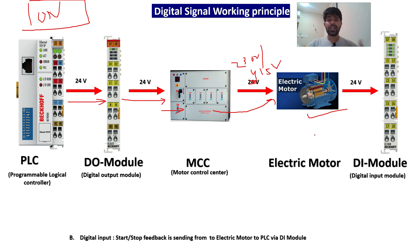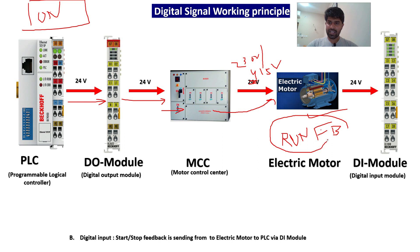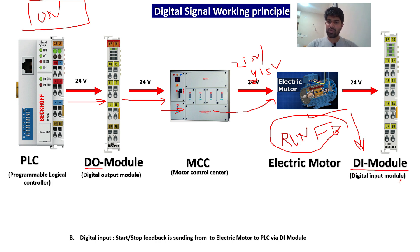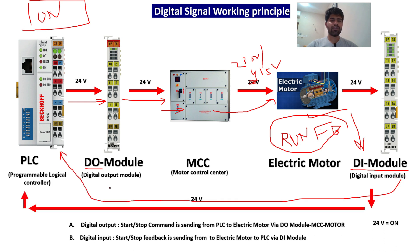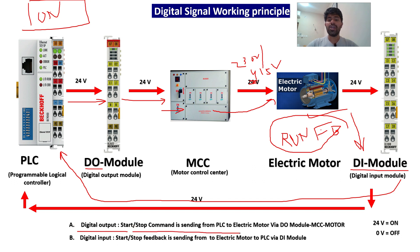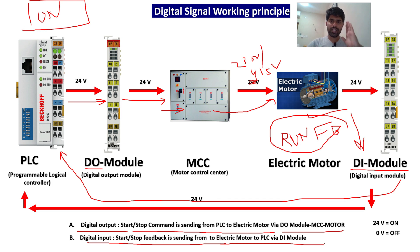The motor gets maybe 230 volt or 415 volt based on its capacity, and then the motor will turn on. How will I know whether the motor is on or off? I will have one tag for run feedback. This motor will have a run feedback signal that I receive through the digital input module. Whatever output goes from PLC is the digital output; whatever we receive from the field or instrument is the digital input. Digital output: the start command is sent from PLC to electric motor via the DO module and MCC. Digital input: start or stop feedback is sent from the electric motor to PLC via the digital input module.